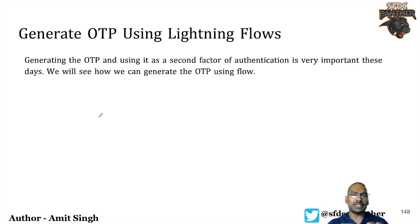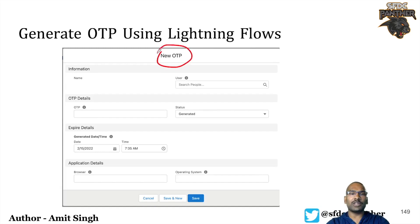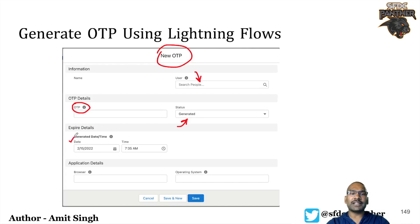We are going to see how to generate an OTP and then use the same OTP in the coming videos as a second factor of authentication. I already have set up an object called OTP inside Salesforce. These are the various fields: the user who is trying to log in, the status of the OTP — either generated or expired — the OTP value which is generated uniquely for each user, when the OTP was generated, the browser the user is trying to log in from, the operating system (Windows or macOS), and a few formula fields.